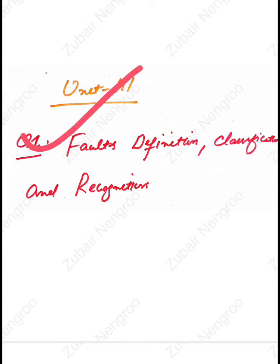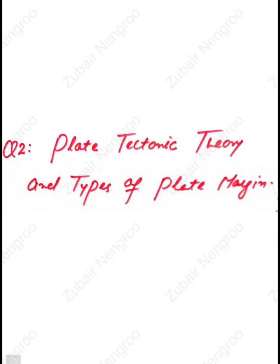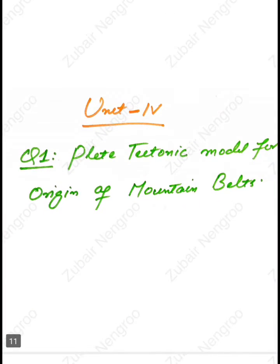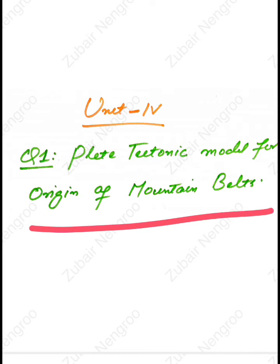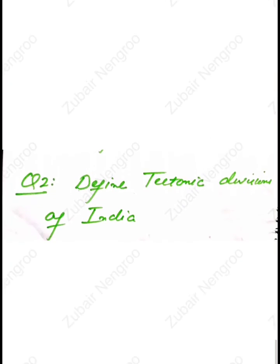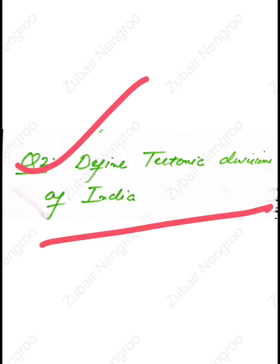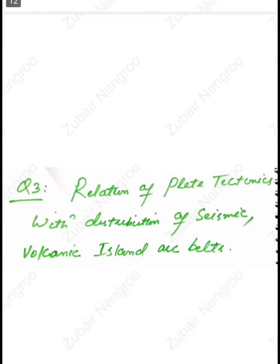Now we have Unit 3. The most important questions include: question number one, fault — its definition, classification, and recognition; and question number two, plate tectonic theory and types of plate margins. Now the last unit is Unit 4. Question number one is the plate tectonic model for the origin of mountain belts, and question number two is define tectonic divisions of India.